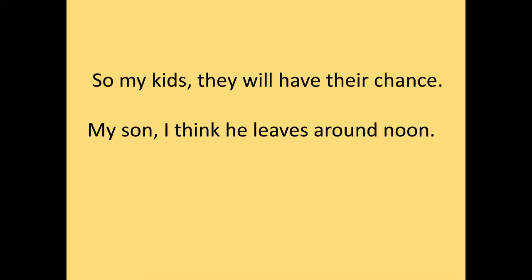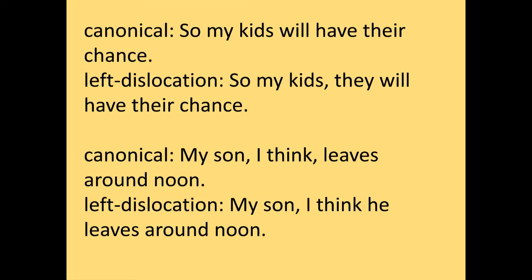So pre-posing and post-posing don't add anything to the sentence. Now look at these sentences: 'My kids, they will have their chance.' 'My son, I think he leaves around noon.' Let's do the second one first. The canonical version would be 'I think my son leaves around noon.' Do you see something extra in the non-canonical version? Is it just that 'my son' got pre-posed? No — there's something extra: 'he' wasn't in the canonical version. Same with the first one — 'my kids will have their chance' becomes 'my kids, they will have their chance.' There's an extra word. So this can't be pre-posing, because in pre-posing nothing gets added. What this is, is dislocation.